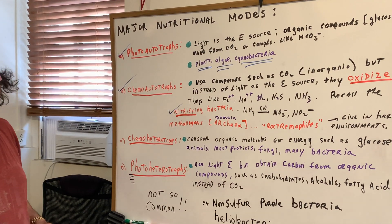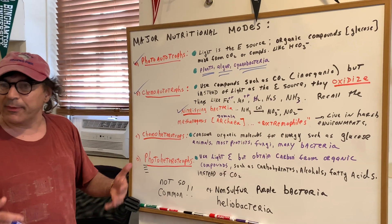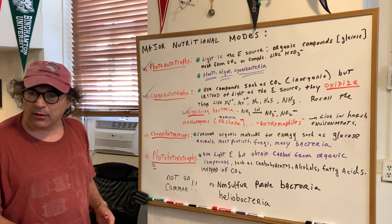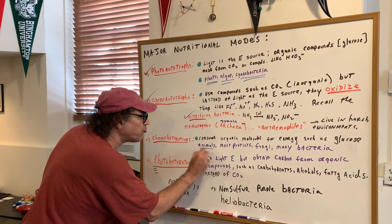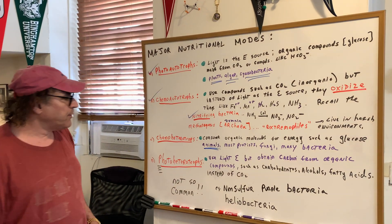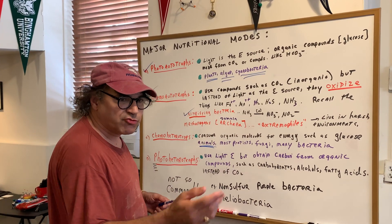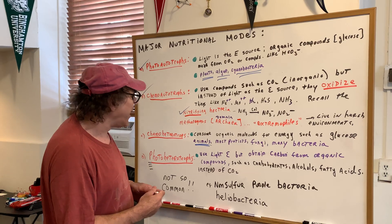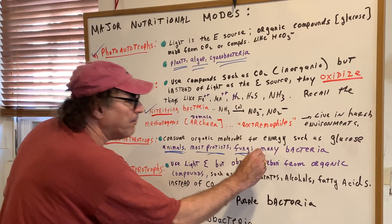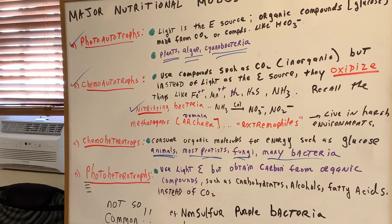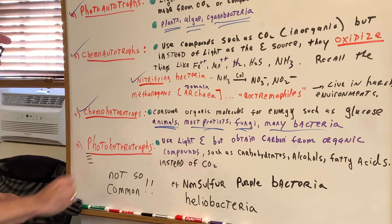Chemo heterotrophs — chemo reminds me of chemicals, and heterotrophs are us — so chemo heterotrophs are animals. They consume organic molecules for energy, such as glucose. Most protists, fungi, and many bacteria would be considered chemo heterotrophs.